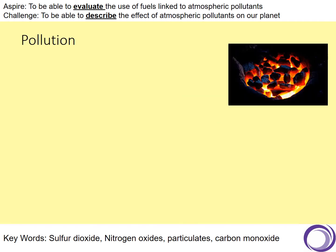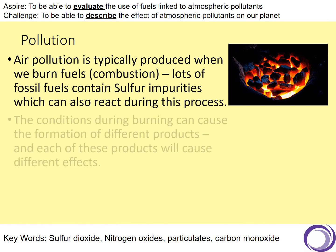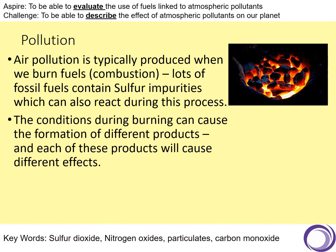Our challenge today is to be able to describe the effect of atmospheric pollutants on our atmosphere. Our aspire is to be able to evaluate the use of fuels linked to atmospheric pollutants. But to do this, we first have to look at what pollution is. Air pollution is typically produced when we burn fuels in a process called combustion. Lots of fossil fuels contain sulphur impurities which can also react during that process. The conditions during burning can cause the formation of different products, and each of those products will cause a different effect on the earth.